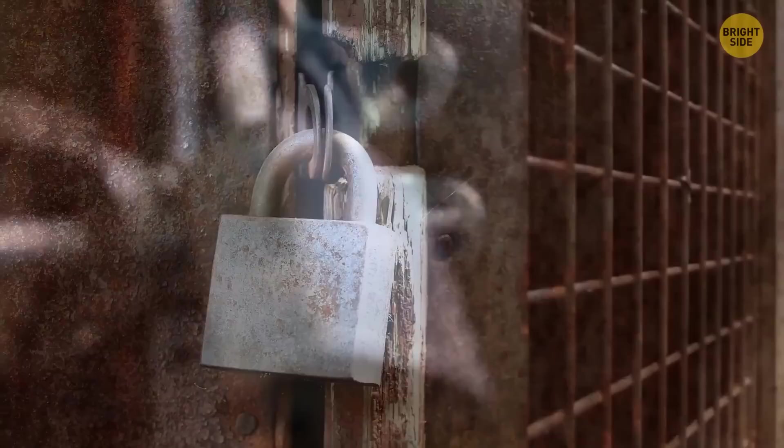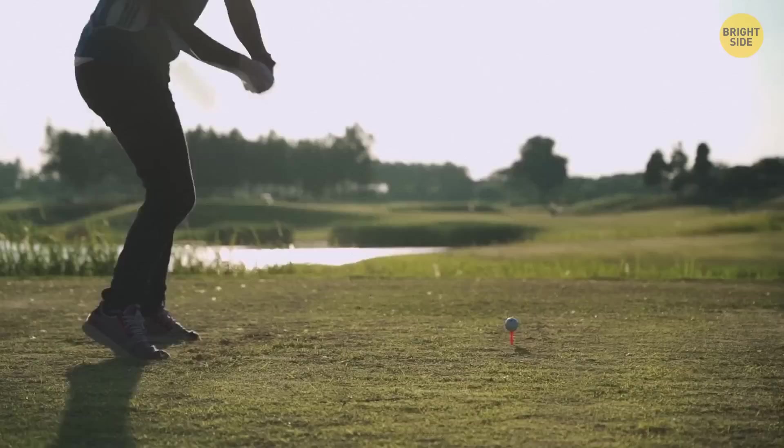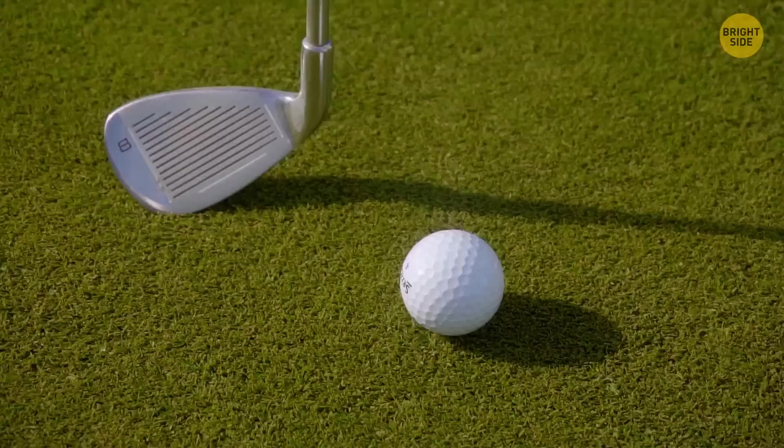A golf ball is covered with tiny craters for good aerodynamics. They're called dimples. And this design helps the ball fly further and more evenly.